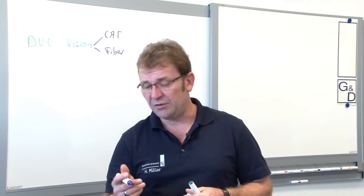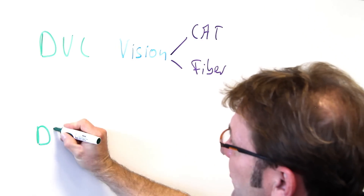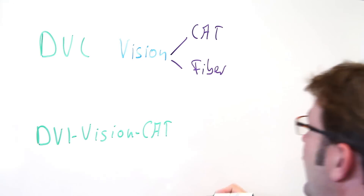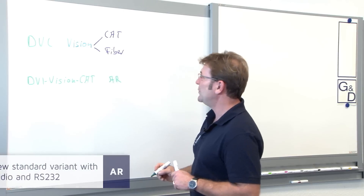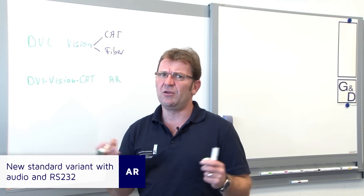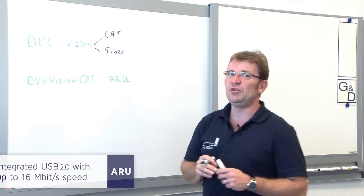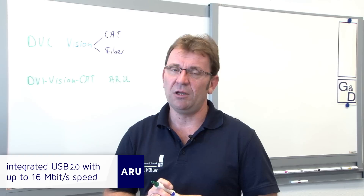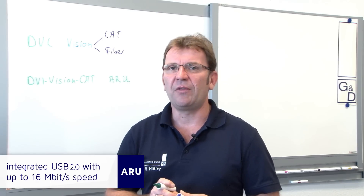Let's have a look at the syntax of the new system, using DVI Vision CAT as an example. Starting with DVI Vision CAT, the different signals follow: the first is audio and RS-232, and that is now standard. Whenever you order a DVI Vision CAT you will get it along with audio and RS-232, because many people used it so we included it as standard. If you want USB transmission, we add a U for USB — that USB is integrated in the single CAT cable, so it does not need a separate cable. That's also why it does not come with full 480 Mbps speed, because we need space on the cable for all the video information.